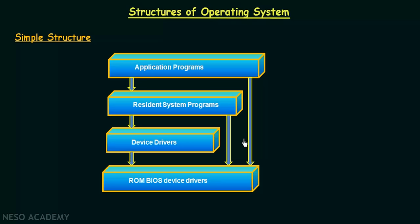We see that the base hardware can be accessed by all the things above it — device drivers, system programs, application programs — everything can access the base hardware. In this structure, the interfaces and levels of functionality are not well separated. Application programs are able to access the basic input-output routines and write directly to the display and the disk drivers, meaning application programs are able to access the base hardware directly without going through the layers below it. This looks like a layered structure, but we cannot call it actually a layered structure.